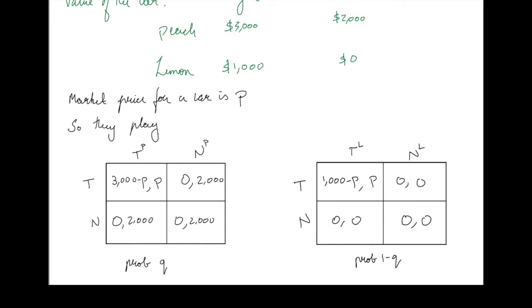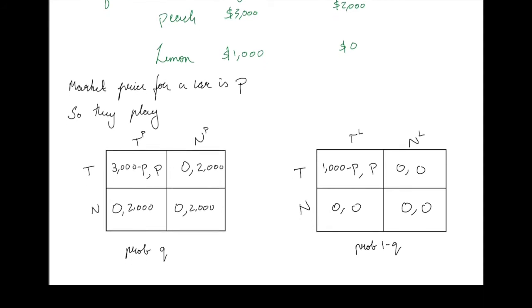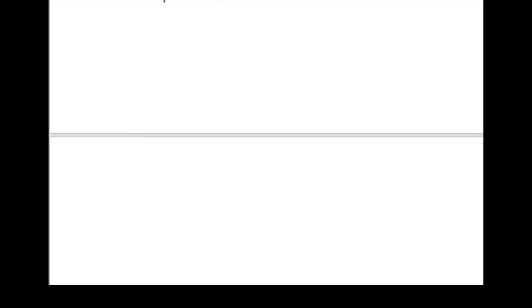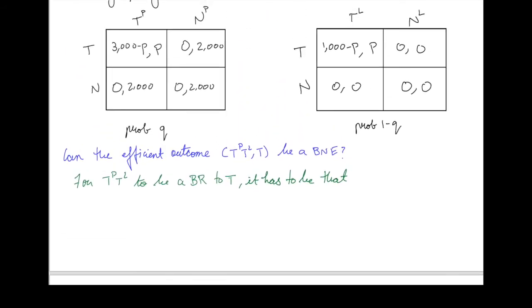Let's figure out the equilibria of this game. Because no matter whether it's a peach or a lemon, the buyer values the car more than the seller, so efficiency says it's the buyer who should end up with the car. Let's check under what conditions an efficient equilibrium exists. For the seller to always want to transact when the buyer wants to transact, it has to be that P is at least $2,000 — so that transacting is a best response for the seller regardless of type. That gives us condition 1: P ≥ $2,000.